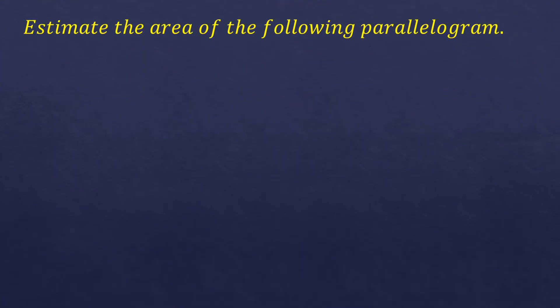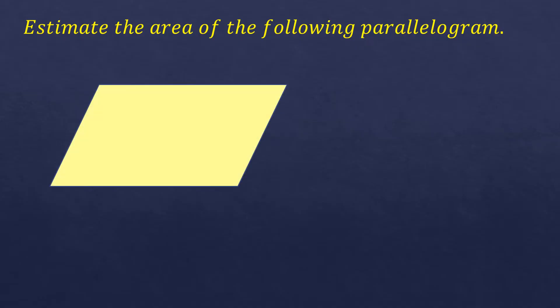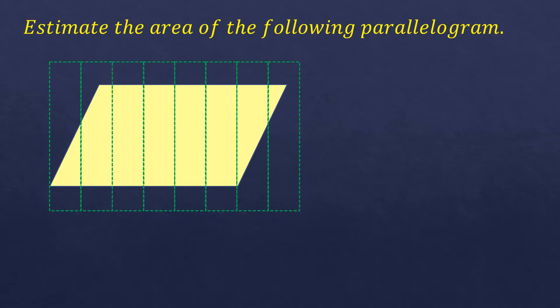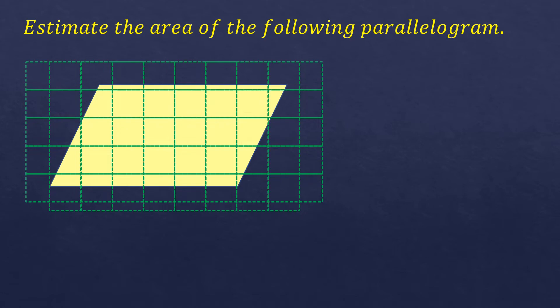Estimate the area of the following parallelogram. Here's the parallelogram, and there's no given length of side, so it's not possible to get an exact value of the area. What we can do is at least estimate. We'll estimate the length for each unit and create a uniform grid covering the parallelogram, then count the shaded squares.